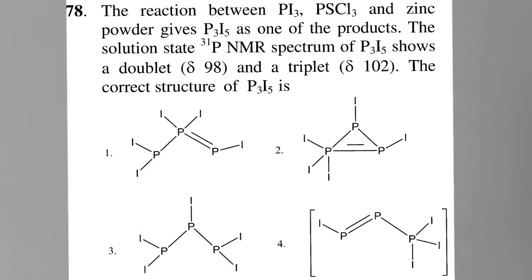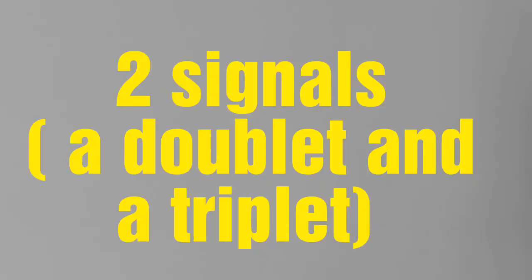The solution state P31 NMR spectrum of P3I5 shows a doublet and a triplet. The most important point that we get from the question is that two signals are obtained with a doublet and a triplet.